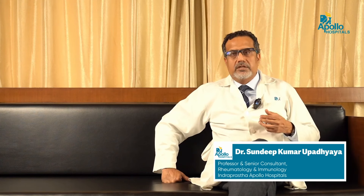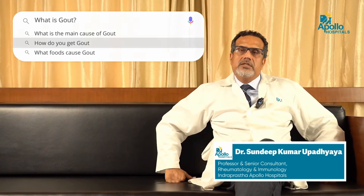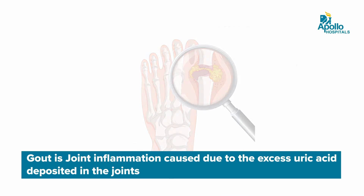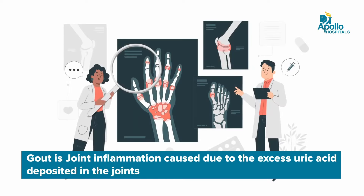Among the several forms of arthritis, which includes immune-mediated arthritis, trauma, and degenerative arthritis, there is a form of metabolic arthritis and that is gout. What is gout? Gout is a metabolic disease where the excess production of uric acid deposits in the joints and causes joint inflammation.